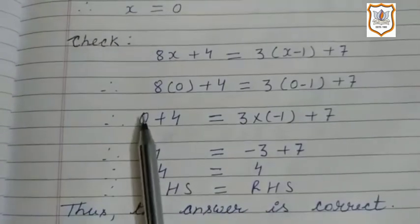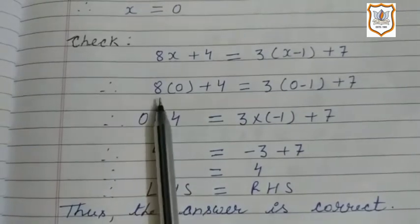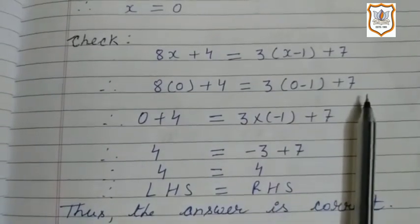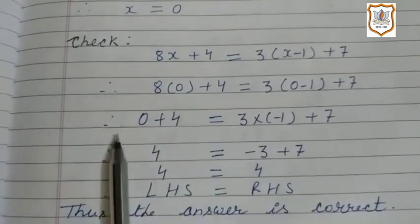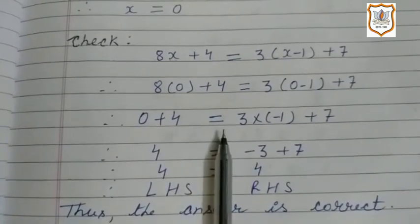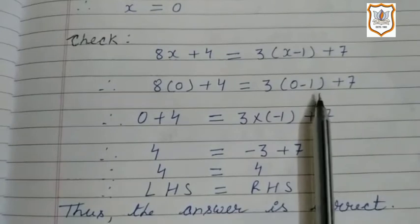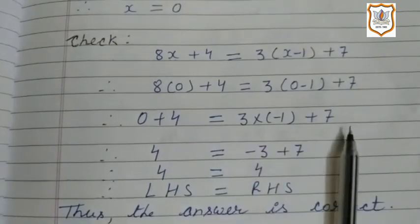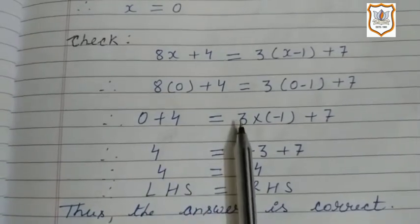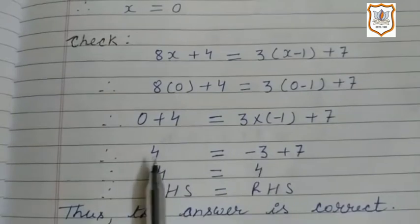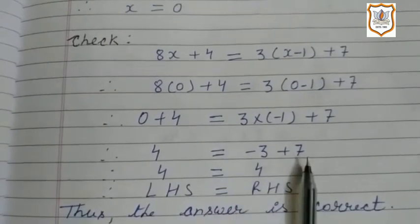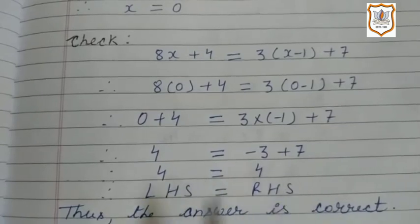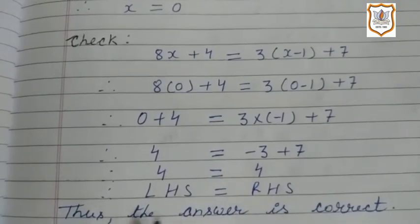Now we put the value of x = 0. So we write 8(0) + 4 = 3(0) minus 1 + 7. 8 × 0 = 0, so 0 + 4 = 4. And 3 × 0 = 0; subtracting 1 from 0 gives minus 1; so 3 × (−1) = −3. We write 4 = minus 3 + 7. Minus 3 plus 7 is 4. So 4 = 4. Left hand side equals right hand side, thus the answer is correct.